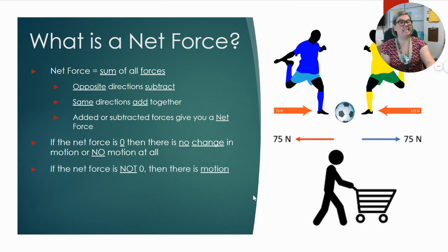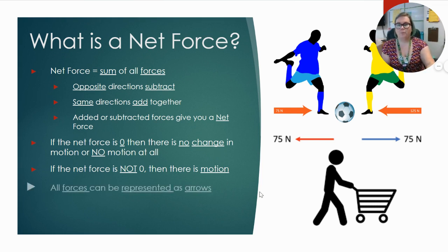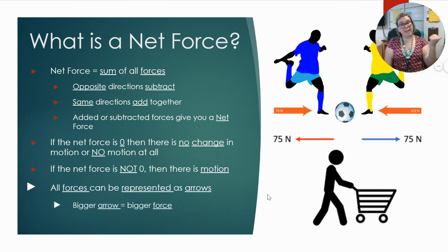If the net force is not zero, then there's definitely motion. So if it's anything other than zero, we're going to have motion. All forces can be represented as arrows, like you see in this picture here. And the bigger the arrow, the bigger a force is. This is kind of just how we start to draw a picture to understand our forces.